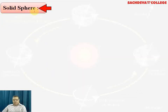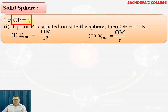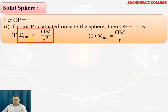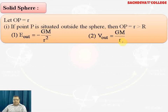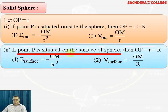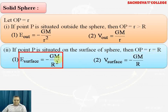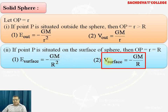For a solid sphere, if point P is outside at distance r > R, the gravitational field intensity is -GM/r² and the potential outside is -GM/r. If P is on the surface where r = R, the surface gravitational intensity is -GM/R² and the surface potential is -GM/R, since the body is brought from infinity.